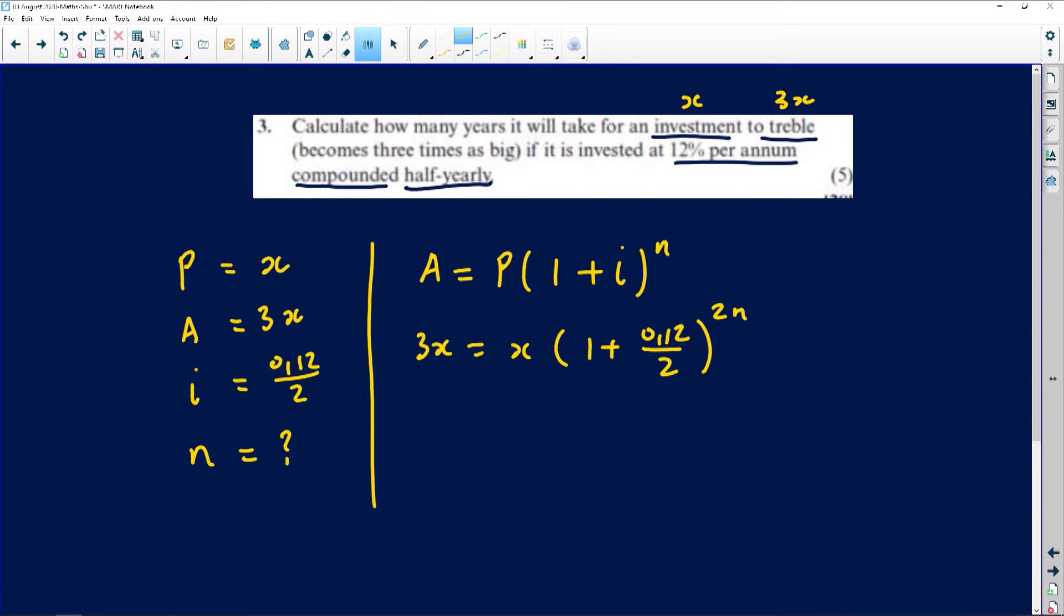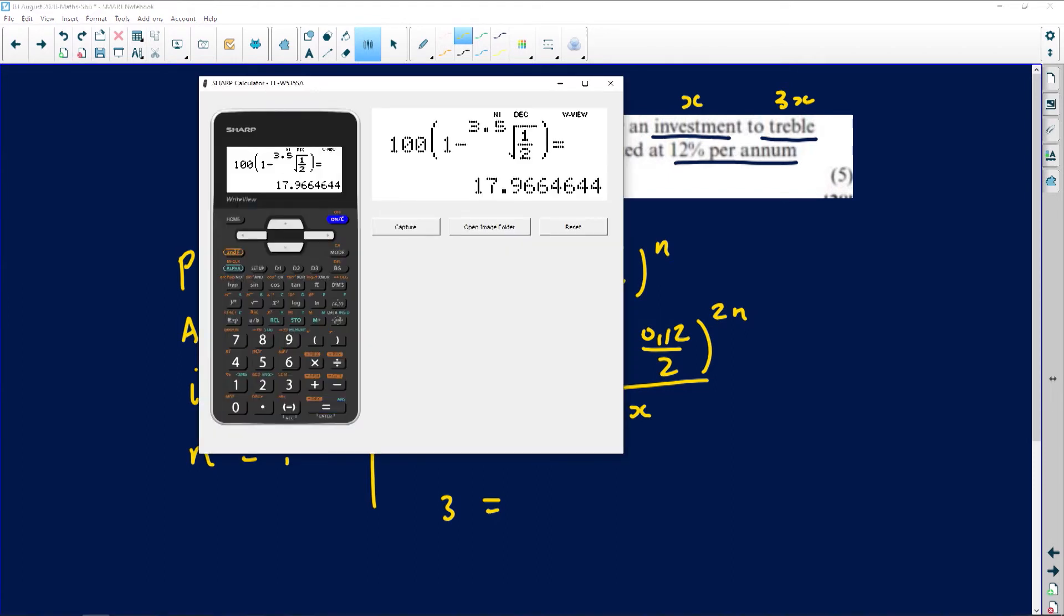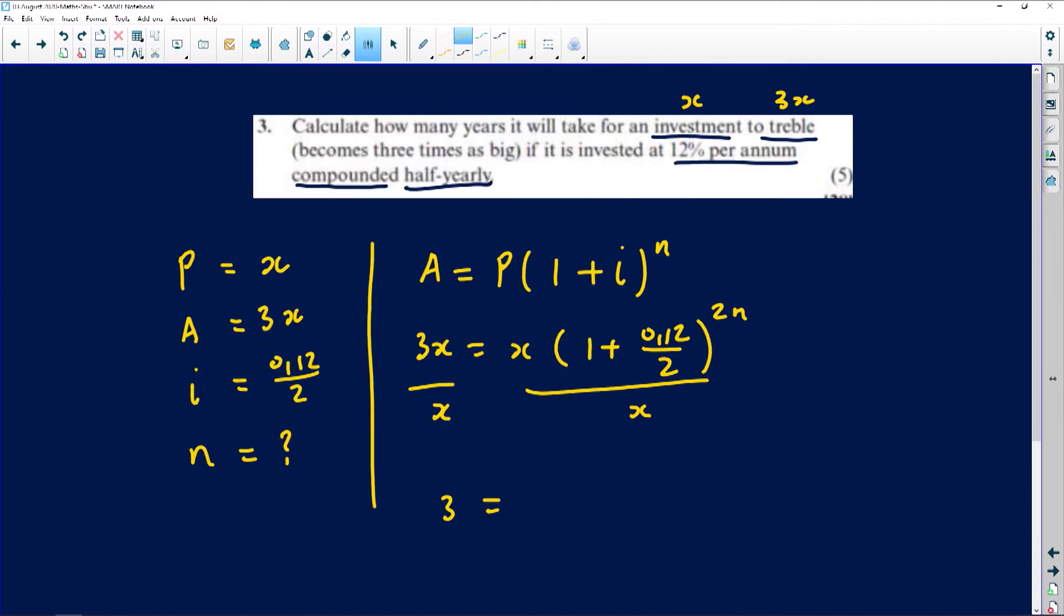Divide both sides by x—that's gone. I'm left with 3 equals (1 + 0.12/2) to the power of 2n. That's 0.06 plus 1 is 1.06. Let's confirm that with the calculator: 0.12 divided by 2, that's 1.06. So 1.06 is the base when the exponent is 2n.